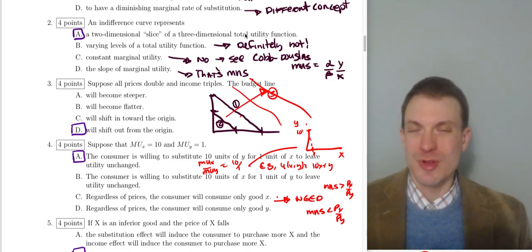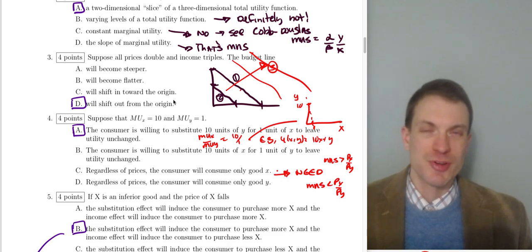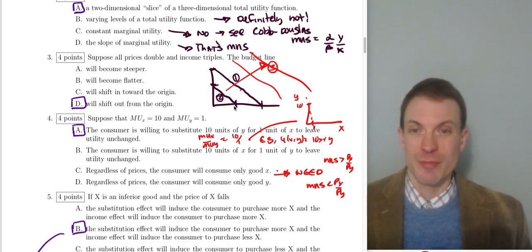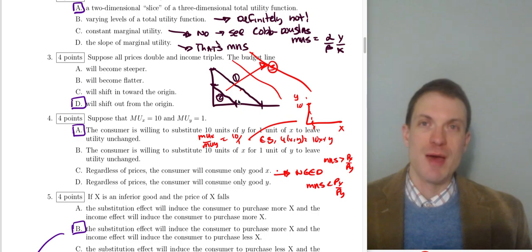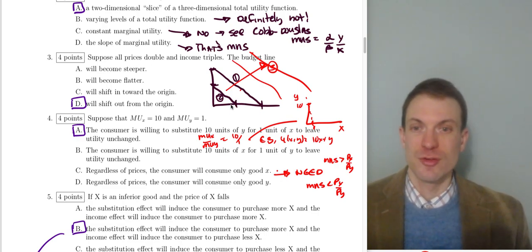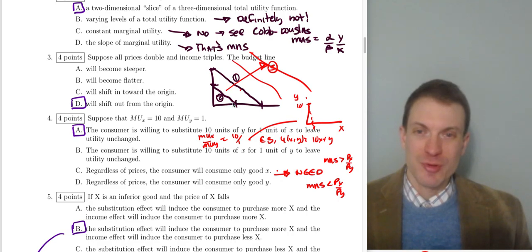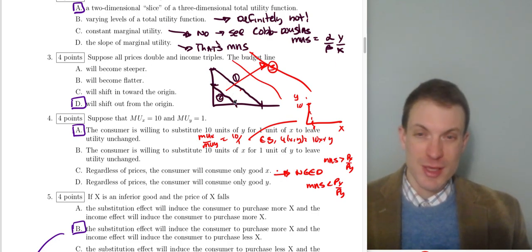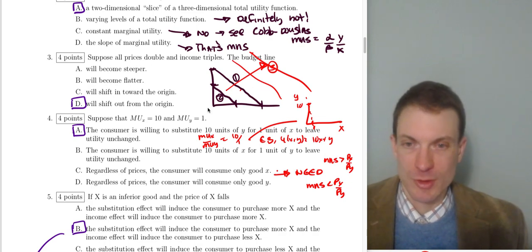Question three: suppose all prices double and income triples — what happens to the budget line? Originally the intercept is m/p1 and m/p2. Doubling prices shifts the intercepts in by half. Then tripling income shifts back out. You end up with 3m/(2p), or 1.5 times m/p. So the budget line definitely shifts out from the origin — the consumer can afford more than before.